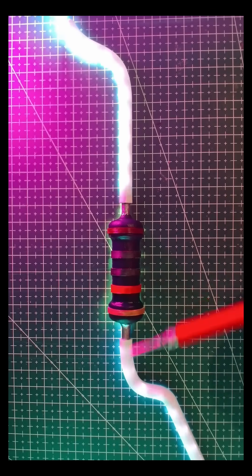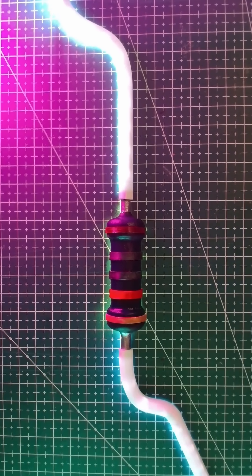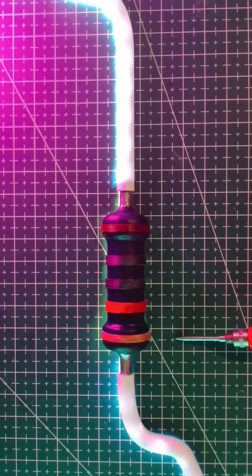Before the resistor the electrons appear brighter because they have more potential energy. After, they are dimmer because they've lost that push getting through.